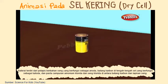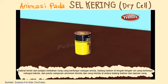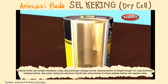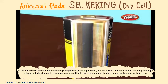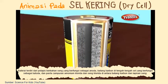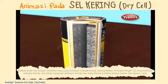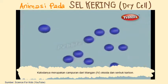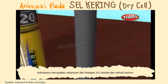It consists of an outer case made of zinc, which is the anode, a carbon rod which is the cathode in the center of the cell, and the space between the carbon rod and the zinc contains a paste of ammonium chloride and zinc chloride. The cathode is a mixture of manganese dioxide and carbon powder.